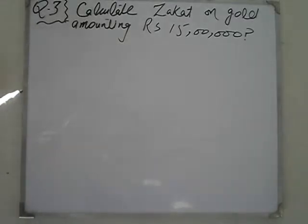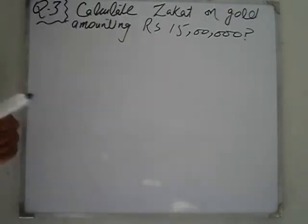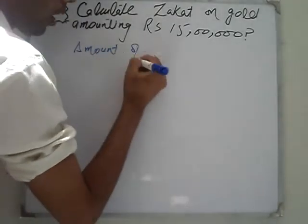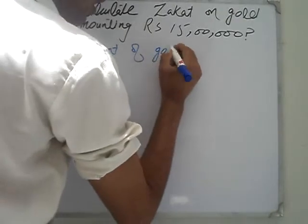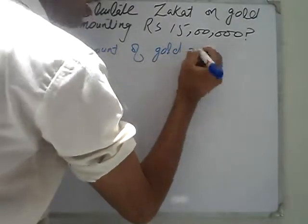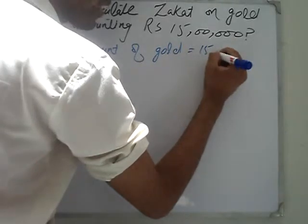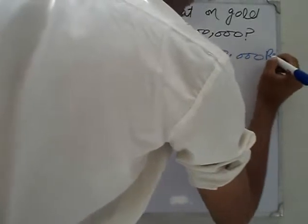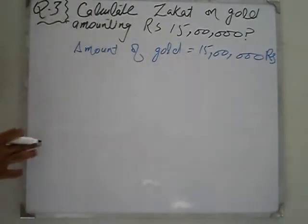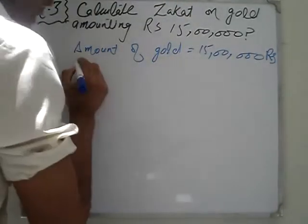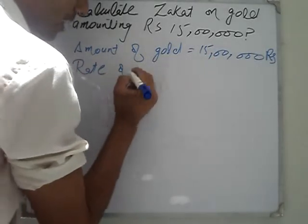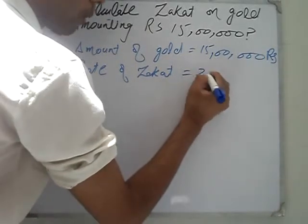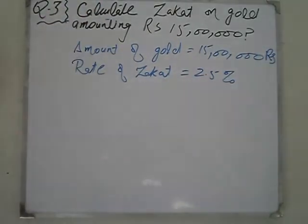Amount of gold: Rs. 15 lakh. Rate of Zakat: 2.5%.